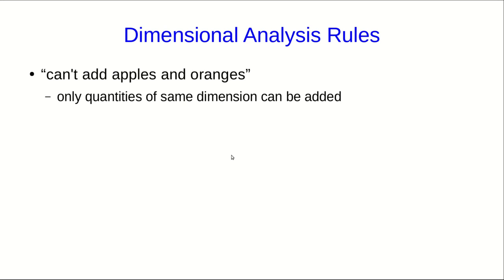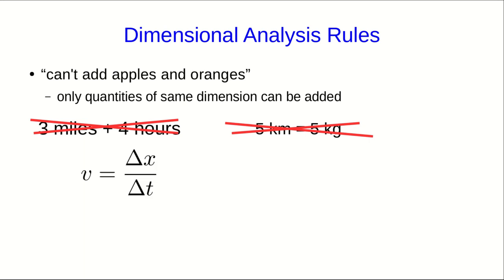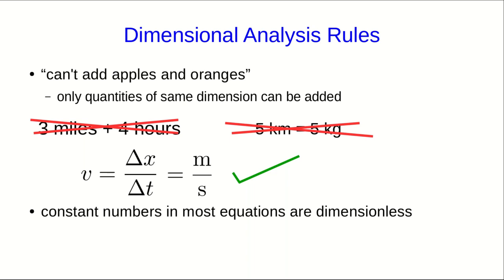There are rules that dimensions have to follow in equations. So, for example, you can't add apples and oranges, and similarly it's meaningless to add distances and times. Similarly, it's nonsense to say apples are oranges, and similarly the two sides of an equation have to have the same dimensions. But there's nothing wrong with dividing or multiplying different dimensions. That's how we get derived units, like meters per second for a speed. The one remaining rule to keep in mind is that constant numbers in equations tend to be dimensionless. So, for example, in the familiar equation for the area of a circle, the pi has no dimensions, and so the area is in meters squared because the r would be in meters.